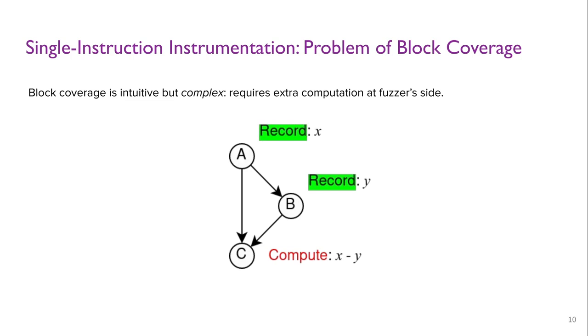In this example, if we record the hit count of basic block A and B as X and Y, then we can obtain the hit count of edge AC as X minus Y. However, this requires extra computation at the fuzzer side.